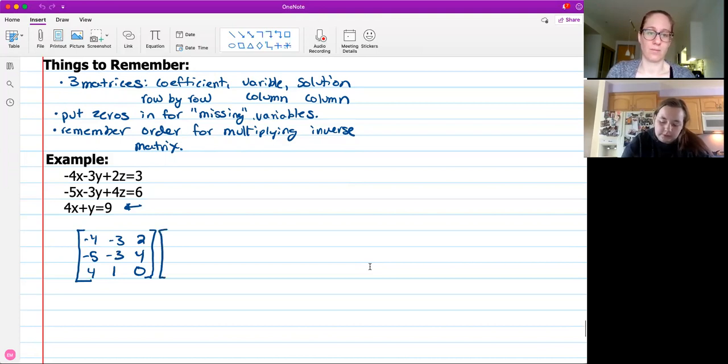And then we're going to create our variable matrix and we're just going to go x, y, z. You take all your variables and you just put them into a nice little column like that. And then equal to your solution matrix. Three, six, nine, just like that.